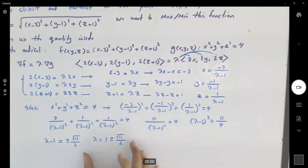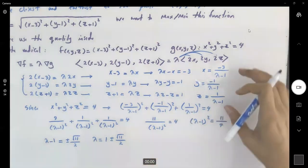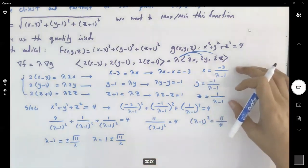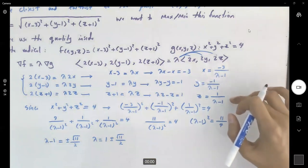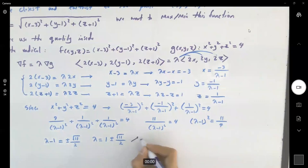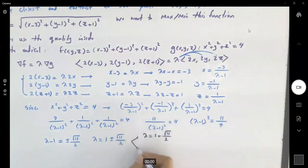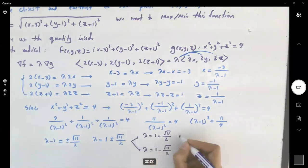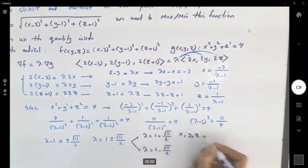We found lambda. Now we go back to x, y, and z and do the calculation. Substitute lambda equals 1 plus square root of 11 over 2, and lambda equals 1 minus square root of 11 over 2 into the expressions for x, y, and z.